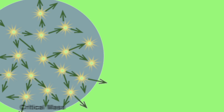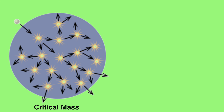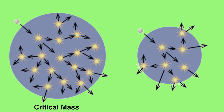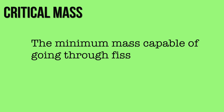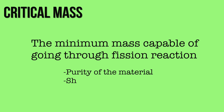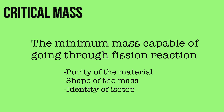There is a minimum mass of a fissile isotope required to sustain a nuclear chain reaction. If the mass is too low, too many neutrons are able to escape without being captured and inducing a fission reaction. The minimum mass capable of sustaining a fission reaction is called the critical mass. This amount depends on the purity of the material, the shape of the mass — which corresponds to the amount of surface area available from which neutrons can escape — and on the identity of the isotope.